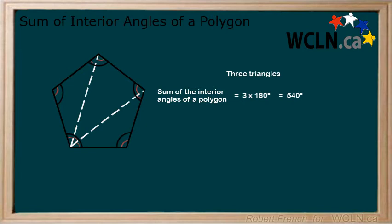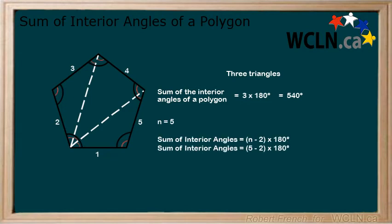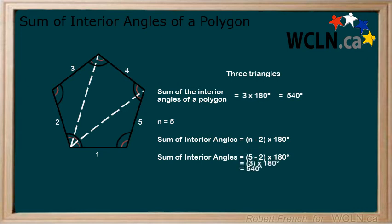Now let's count the sides. There are five sides, so n equals 5. Starting with our formula, replace n with 5 and solve. We get that the sum of the interior angles is 540 degrees.